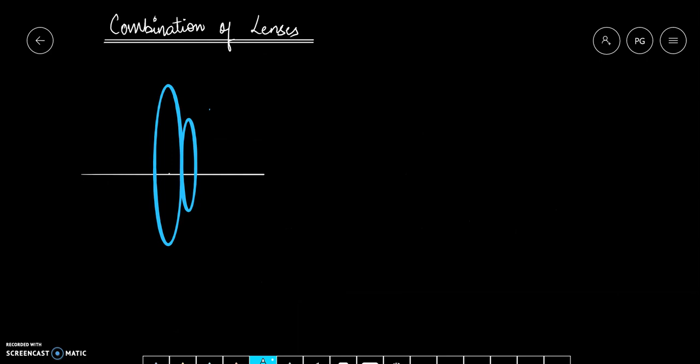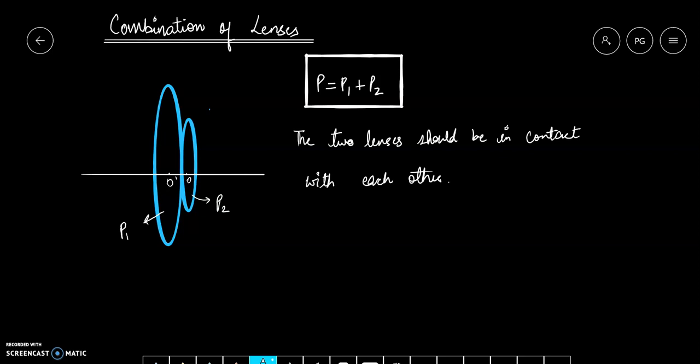Now let us suppose I have two lenses. I have placed them just in contact with each other. Both are in exact contact. Let's suppose one has power P1 and second lens has power P2. Then this combination will have power equal to the addition of the power of these constituent lenses.